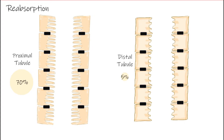Both areas have tight junctions between cells, but there is a difference in the type. In the distal tubule, where very little reabsorption occurs, these are truly tight junctions that strictly limit movement of material between cells. In the proximal tubule, we refer to these as leaky tight junctions — they put up some resistance but allow many substances to pass through quite freely.